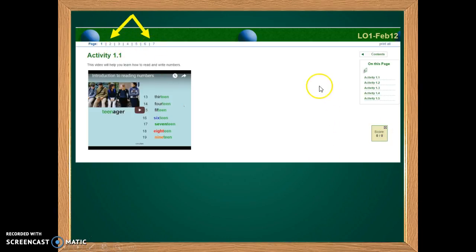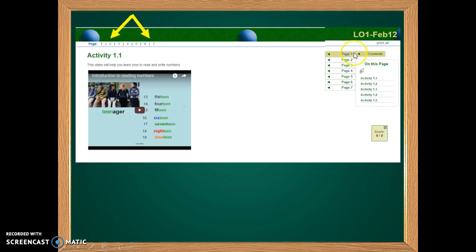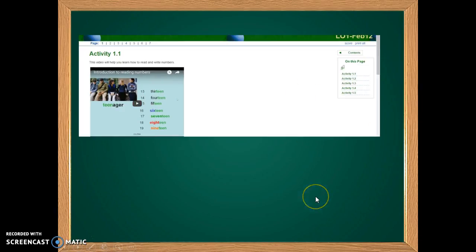You can also move to a different page by clicking on the contents menu. Click on the page you want and a list of the activities on that page appear. You can move directly to any activity by clicking on it. You can also use the scroll bar to move between activities on a page.